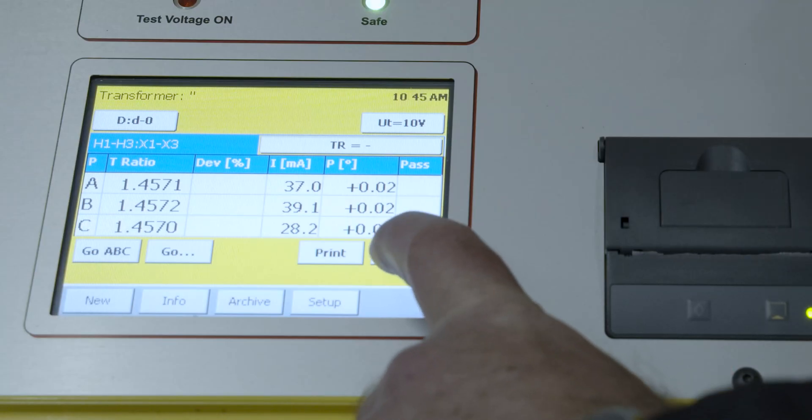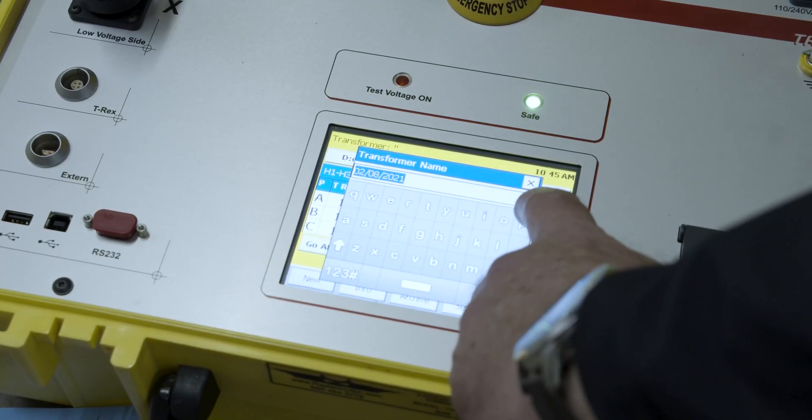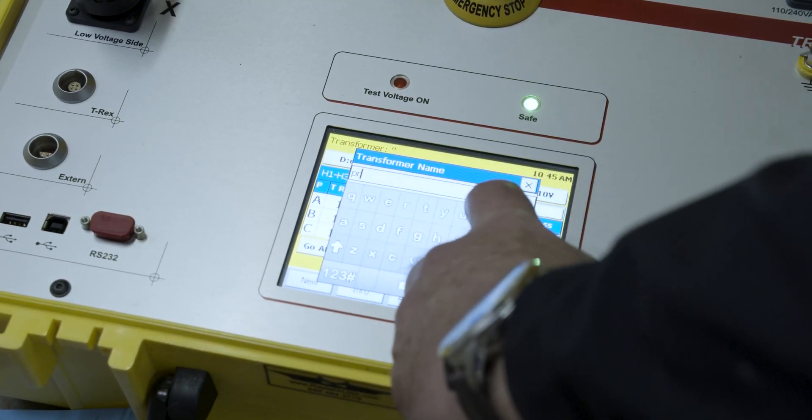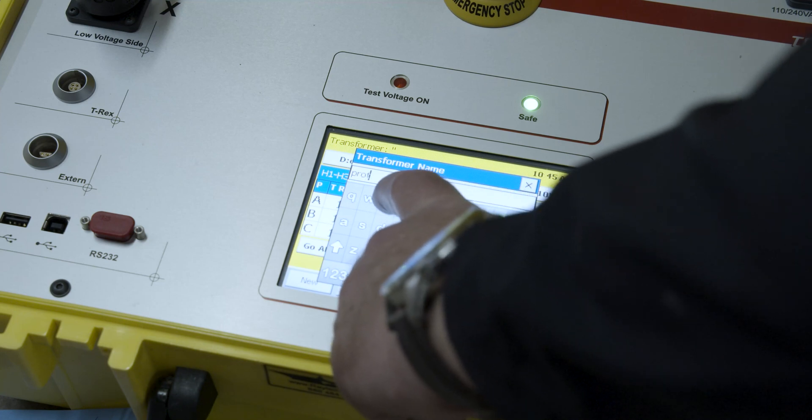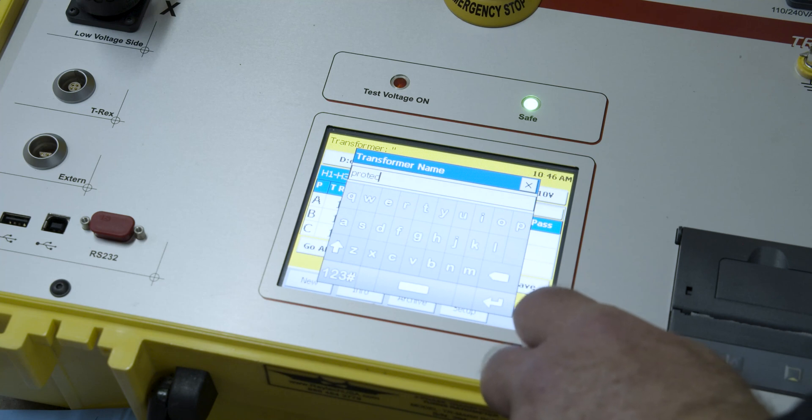We can also save these test results and if you press save it's going to come up and ask you for a transformer name. Just for practical purposes here I'm just going to put in protec and then when I hit enter it's going to ask me for additional information what's the transformer serial number.